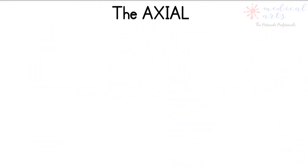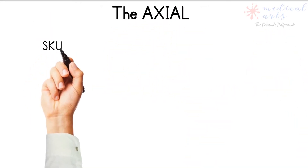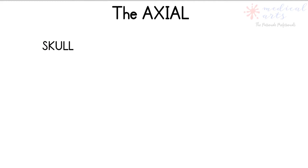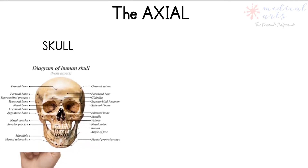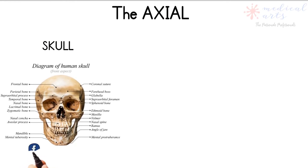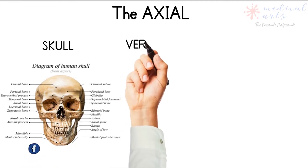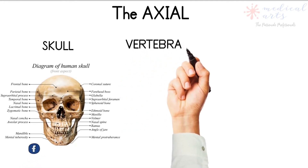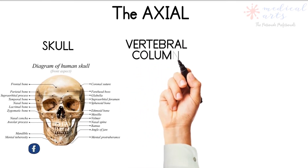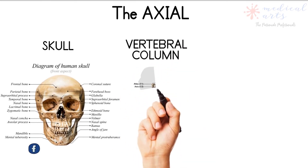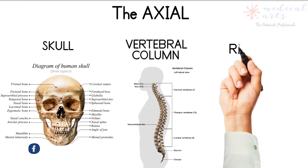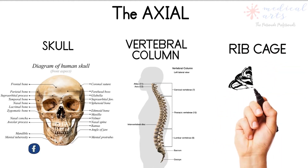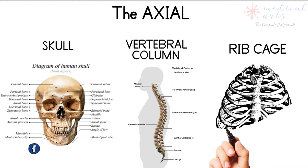The axial contains three major parts. First, we have the skull, which is made of two groups of bones: the cranium and the facial bones. The second part of the axial skeleton is the vertebral column, which is made of 33 vertebrae. Furthermore, the rib cage is made of the sternum and 12 pairs of ribs.